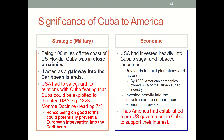Cuba also had significant economic importance to America, with many US companies investing heavily into Cuba's sugar and tobacco industries. For example, US companies bought large amounts of land to build plantations and factories, and by 1926, American companies owned 60% of the Cuban sugar industry. They also invested heavily in infrastructure to support their economic interests. America had established a pro-US government in Cuba to ensure it could always support their interests on the island.